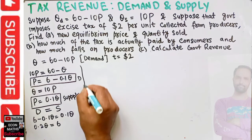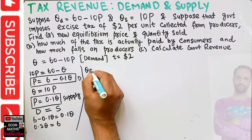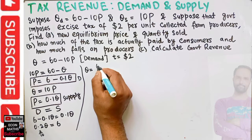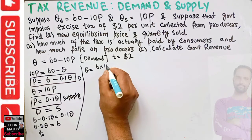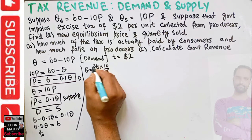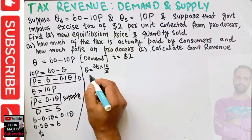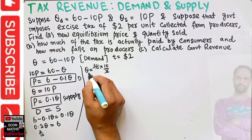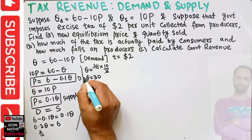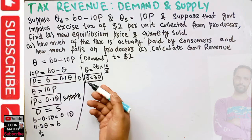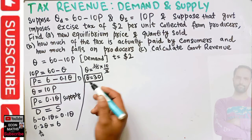Solving for q: q equals 6 divided by 0.2, which is 6 divided by (2/10), giving q equals 6 times (10/2) = 30. So the initial equilibrium quantity is 30 units.